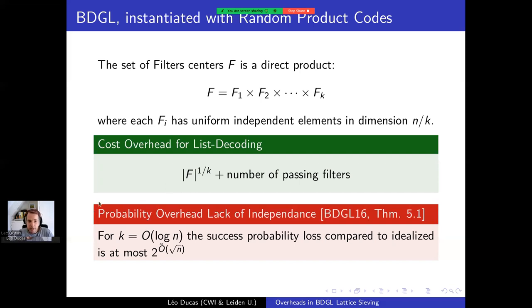However there's another overhead by this construction that is described in this theorem 5.1 which is a probabilistic overhead which is specifically the loss that is related to the lack of independence of your spherical code. More precisely it is proven that if you take k equal log n or bigger than log n then the success probability loss compared to the idealized case, namely the case where f would be perfectly random, is at most sub-exponential 2 to the Õ(n²). So this work is basically about concrete estimation of this factor.